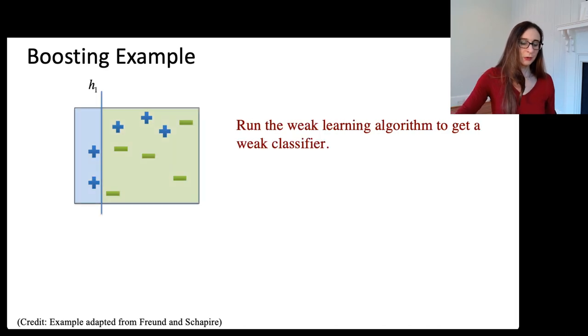Let's start the points off with equal weight. Then we run the weak learning algorithm, and it gave us this weak classifier. Our weak learning algorithm can only produce horizontal and vertical separators. That's why it's a weak learning algorithm. This particular weak learning algorithm got a few points wrong. It got three positive points wrong. Now what we'll do at the next iteration is make sure that those three points get extra attention at the next iteration.